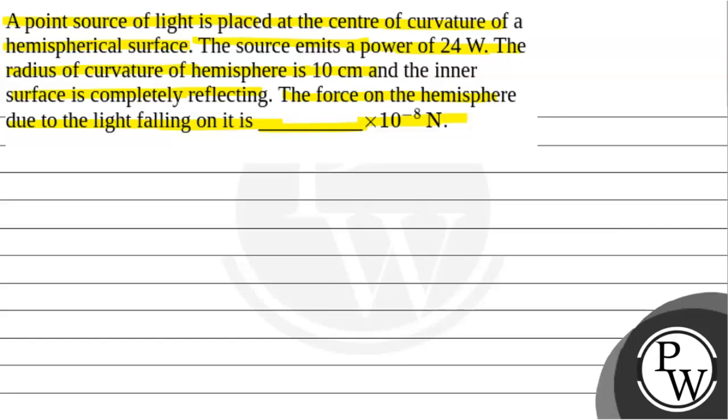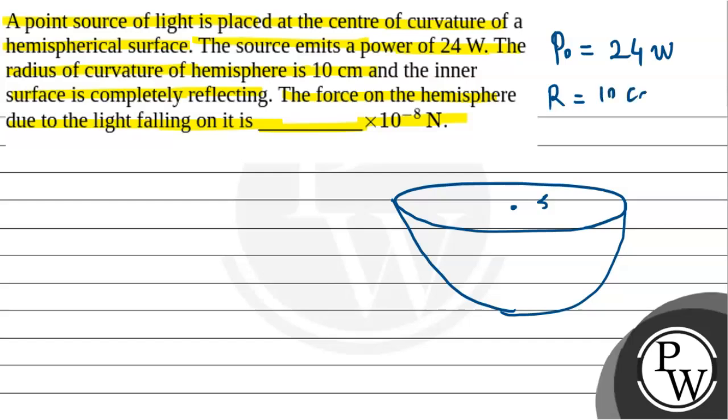Now we are talking about a hemisphere where the inner surface is completely reflecting. At the center of curvature, a point source of light is placed, which emits power P₀ equal to 24 watts. The radius of curvature for this hemisphere, capital R, is 10 cm.